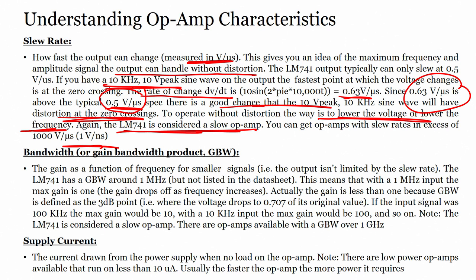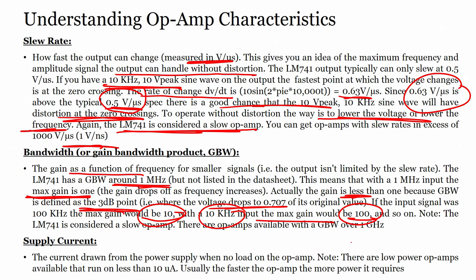Bandwidth, or gain-bandwidth product, is a very important characteristic — it is the gain as a function of frequency for smaller signals where the output is not limited by slew rate. The LM741 has a gain-bandwidth product of 1 megahertz. This means with a 1 MHz input, the maximum gain is 1. The gain-bandwidth product is defined at the 3 dB point, where voltage drops to 0.707 of its original value. If the input signal is 100 kHz, the maximum gain would be 10; at 10 kHz, the maximum gain would be 100.